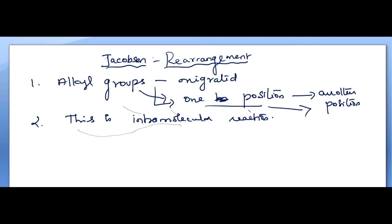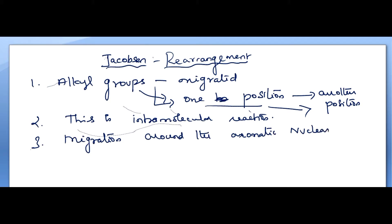The alkyl group migrates around the aromatic nucleus from one position to another.